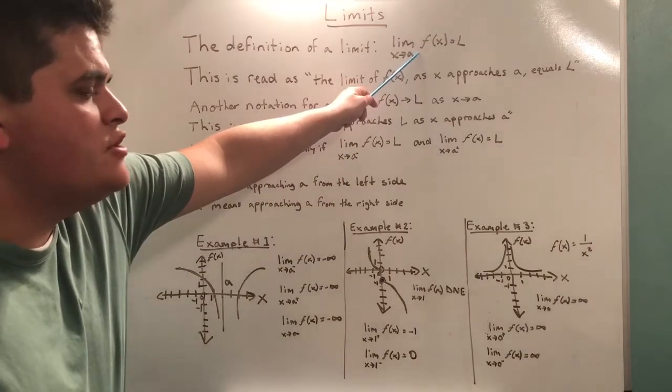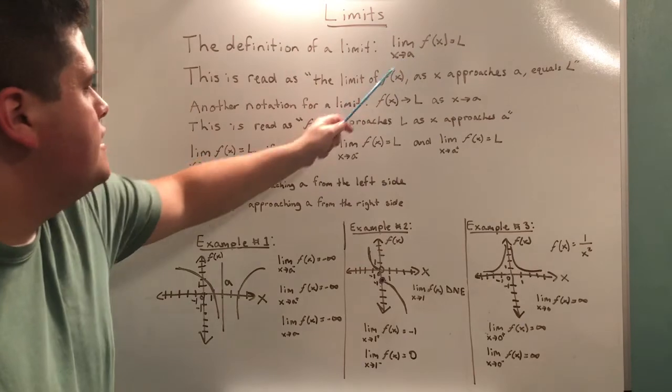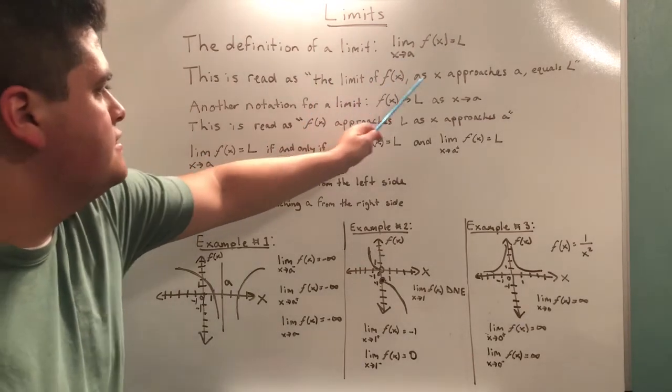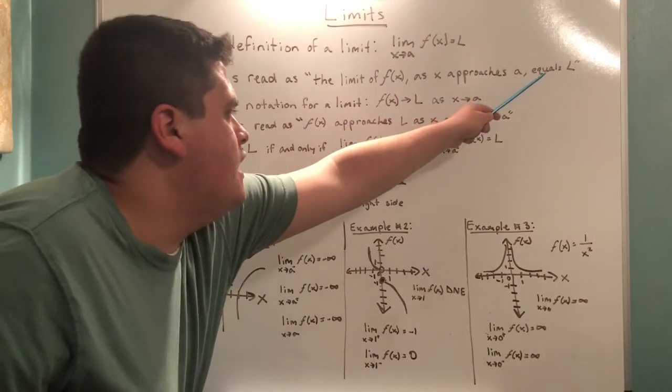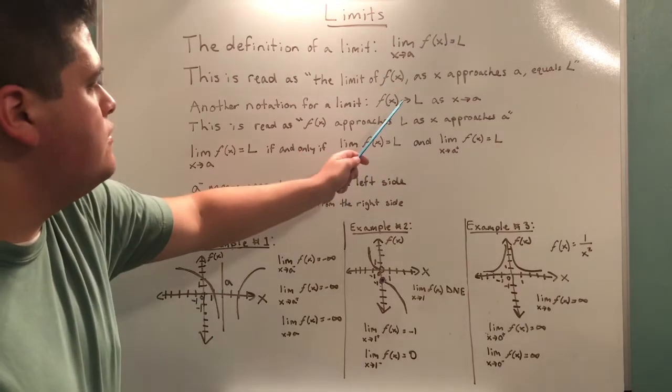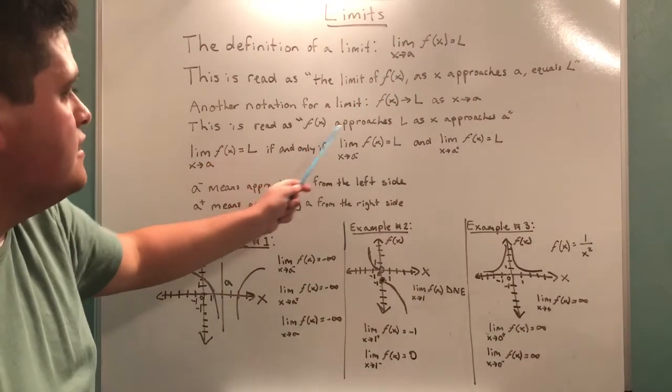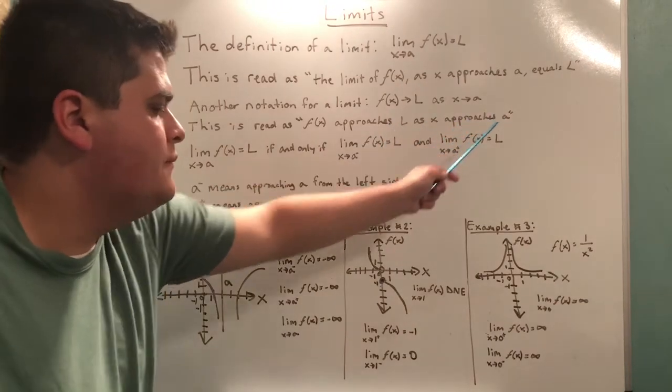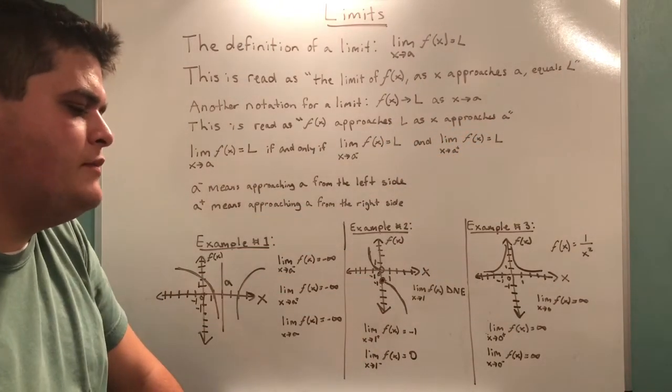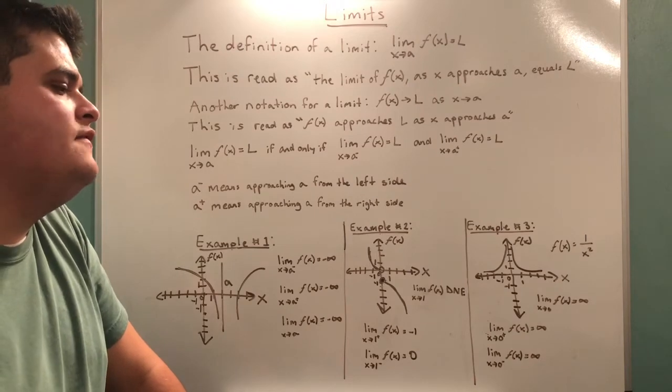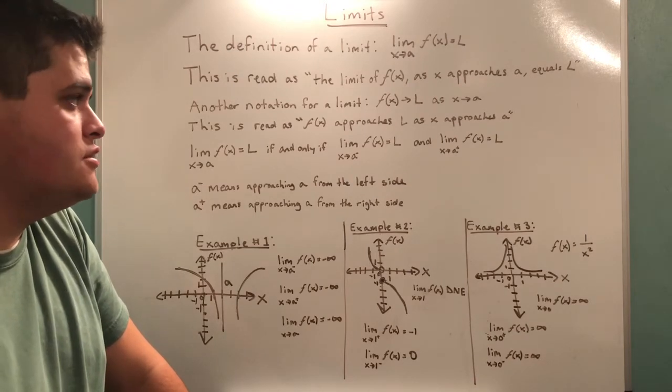This is the formal definition of a limit. This is read as the limit of f(x) as x approaches a equals L. This is another way to express this formula. This is read as f(x) approaches L as x approaches a. So calculus and limits, it's all about finding the values that your function approaches.